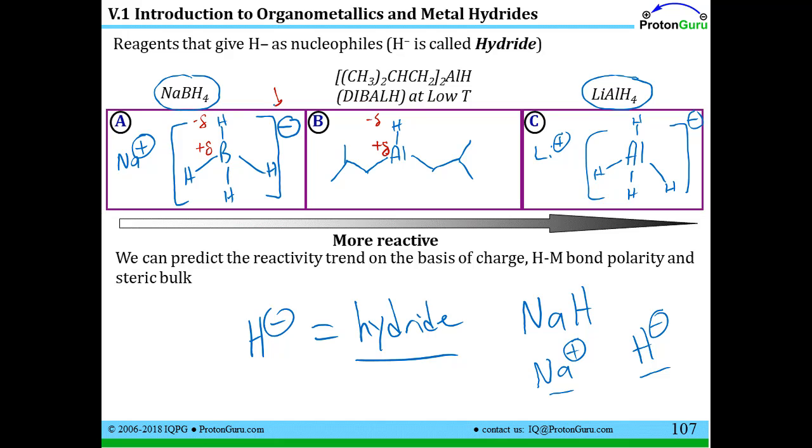But the aluminum based hydrides are still a little more reactive. And the lithium aluminum hydride has both the aluminum-hydrogen bond, which is pretty polar, and it has the negative charge on it. So that makes it more reactive than the neutral DIBAL-H. So we have the potential to use a simple salt like sodium hydride, or one of these three other salts to provide negatively polarized or anionic hydride nucleophiles for reactions.